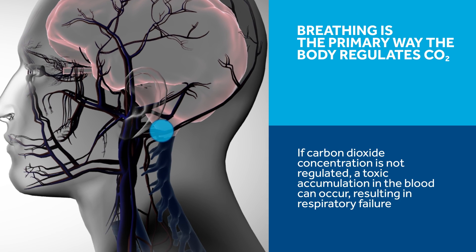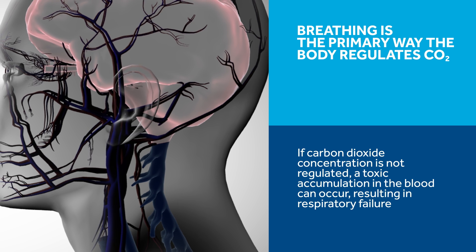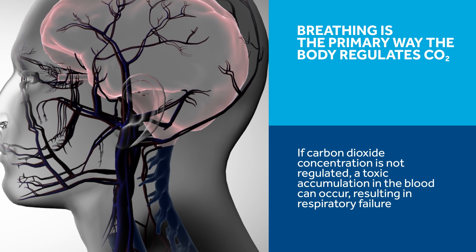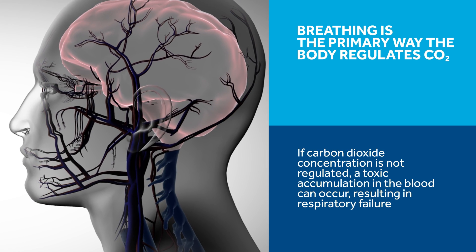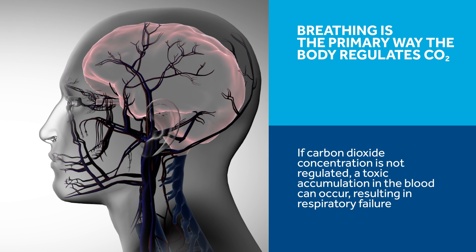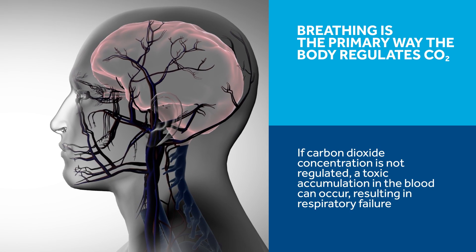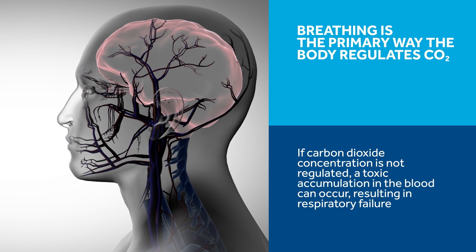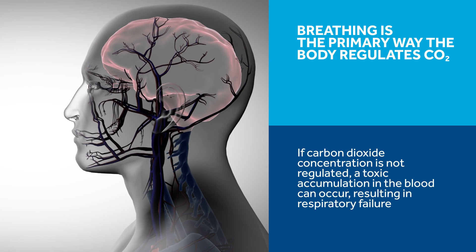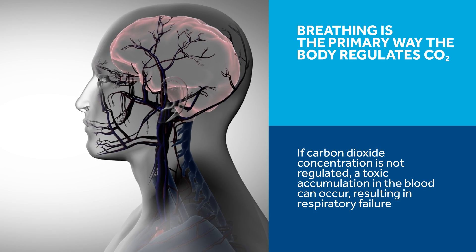The medulla oblongata controls both the rate and depth of breathing to regulate CO2 levels. If carbon dioxide concentration is not regulated, a toxic accumulation in the blood can occur, resulting in respiratory failure. Although the medulla oblongata is the primary regulator of breathing, a secondary mechanism regulates breathing in response to hypoxemia, stimulating peripheral chemoreceptors located in the vascular system of the aortic and carotid bodies.